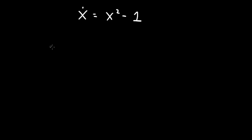So I want to find the fixed points and determine the linear stability of these fixed points. So this is a differential equation, x-dot equals f of x, and f of x is this function x squared minus 1.